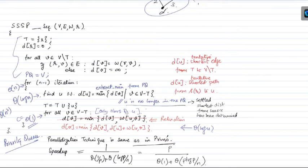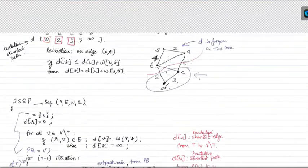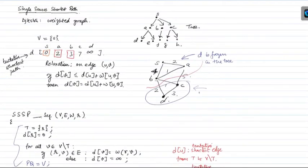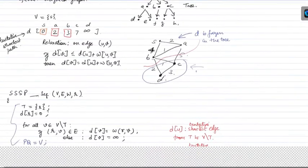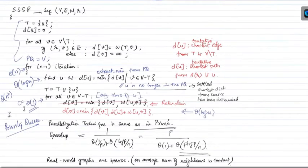Let's quickly revisit what we did last time, and then we'll continue from there. We were looking at the single source shortest path problem, and you've already seen Dijkstra's algorithm. We looked at what happens in the sparse case.